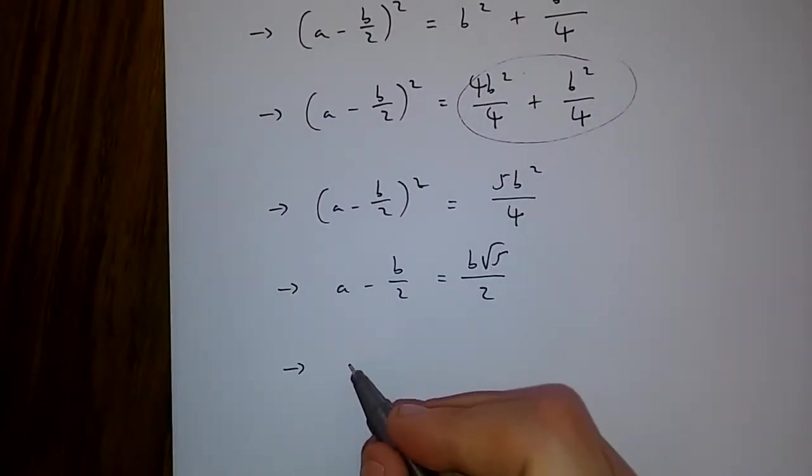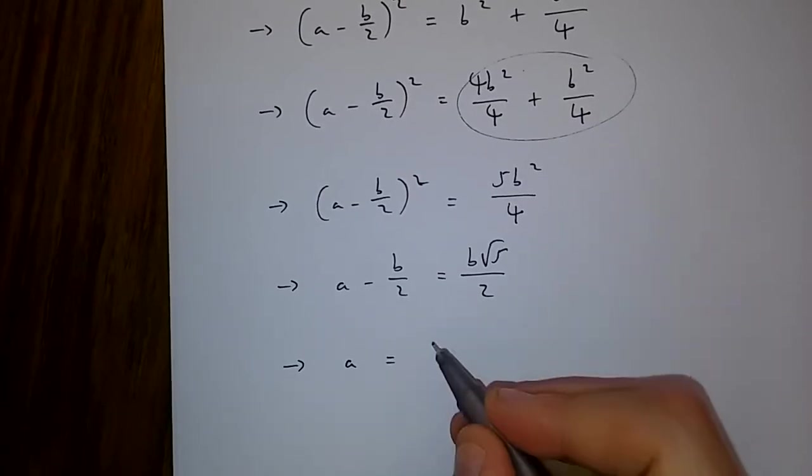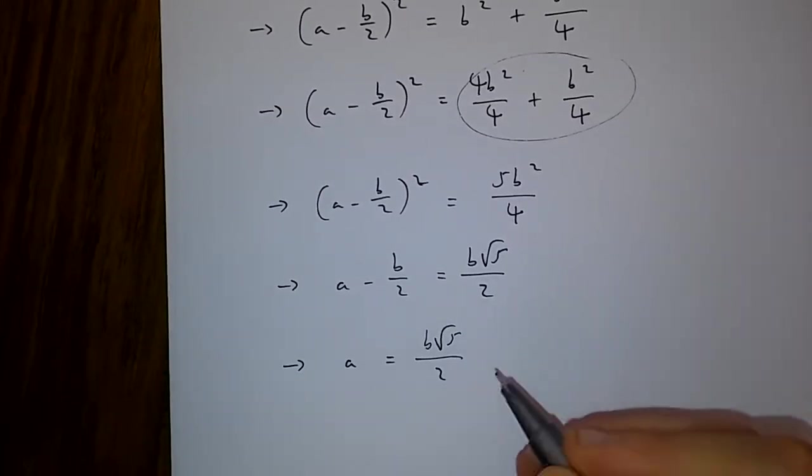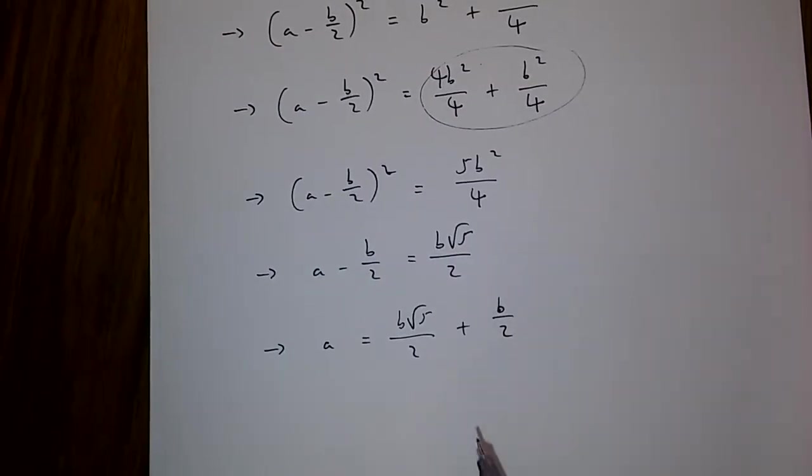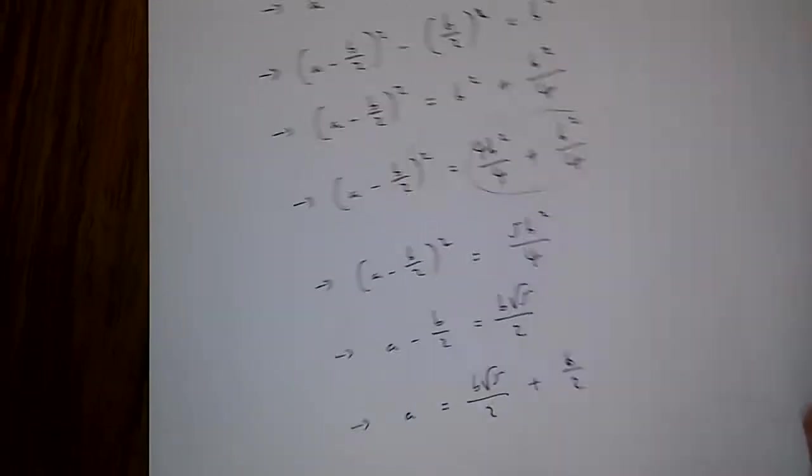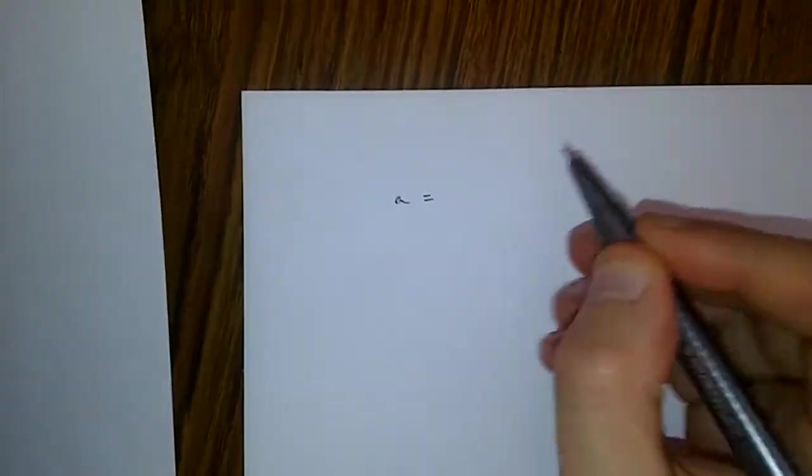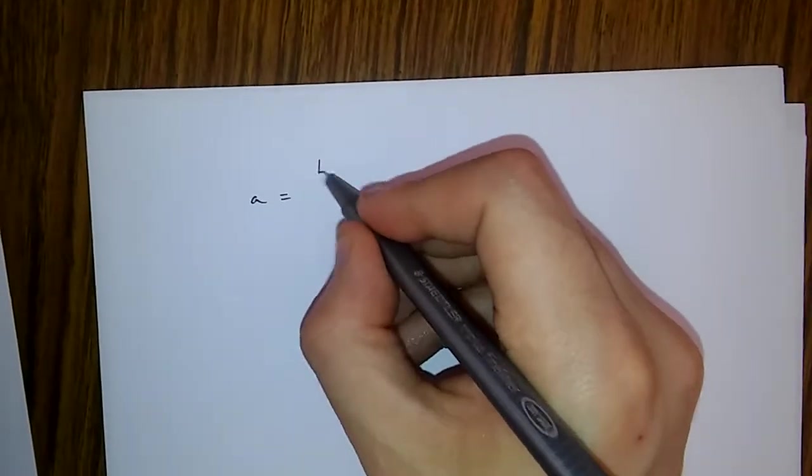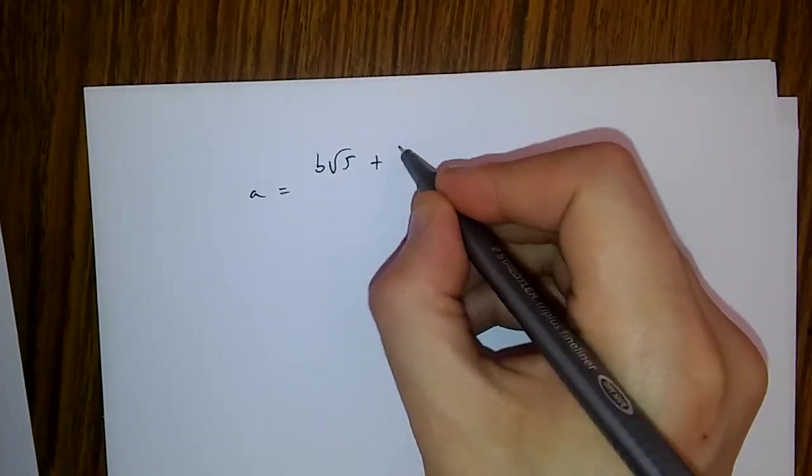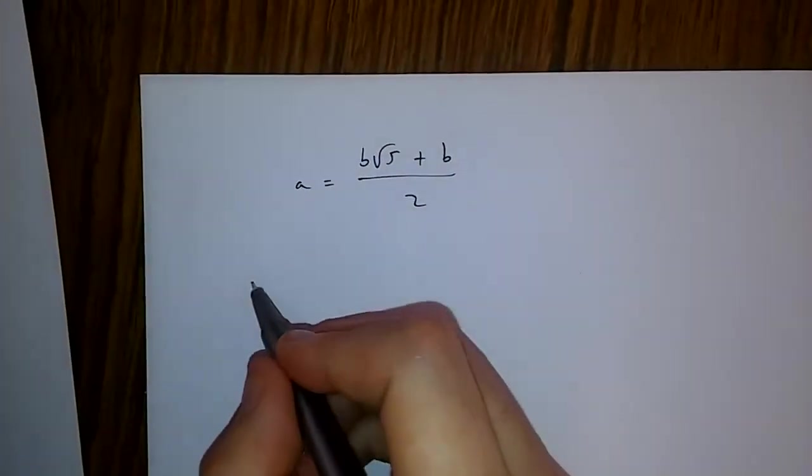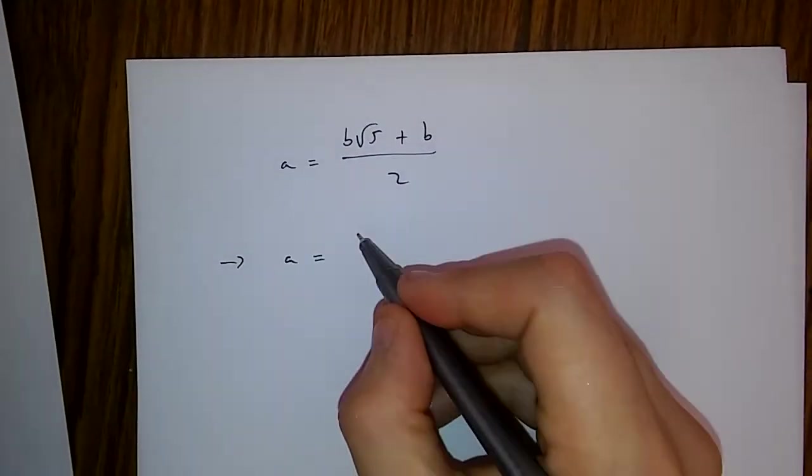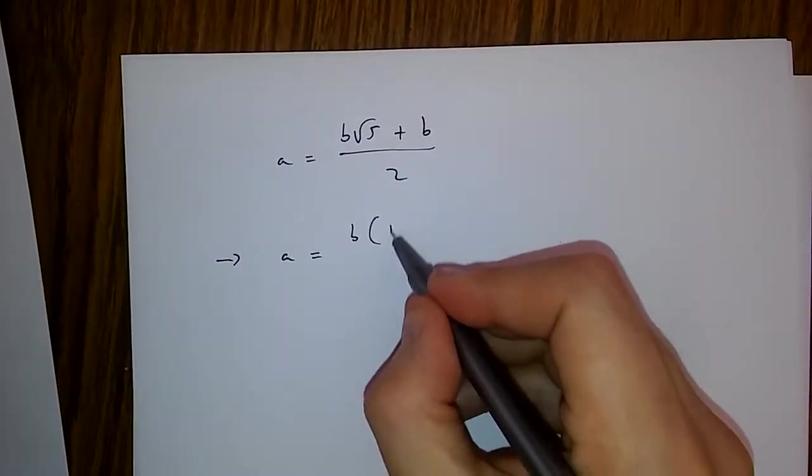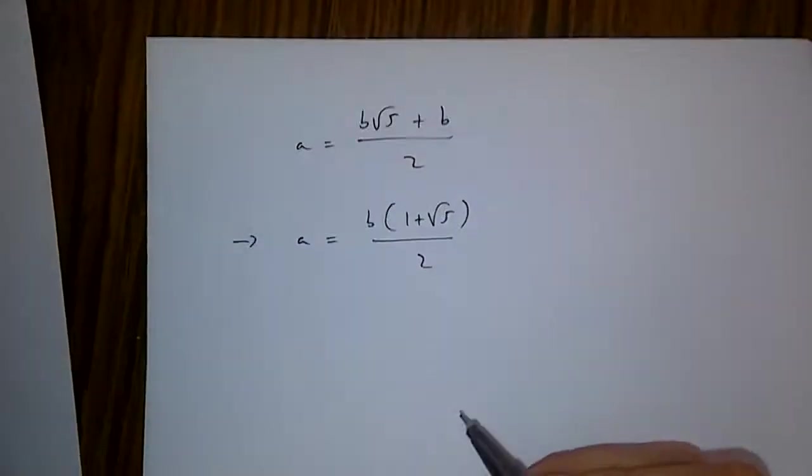And if we have this, then we get a is equal to b√5/2 + b/2. Now let's simplify this further. We're going to get a is equal to (b√5 + b)/2, and this can be transformed into a = b(1 + √5)/2.